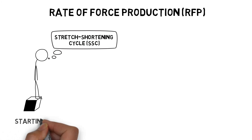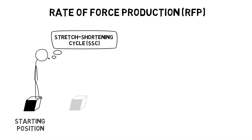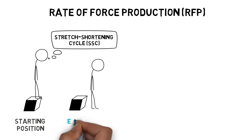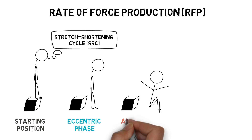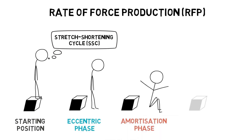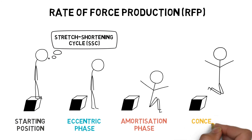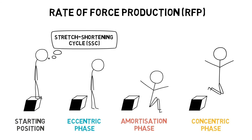A perfect example of this in action occurs during a depth jump. As the individual begins to land, the muscle lengthens, which is known as the eccentric phase. When the individual is at the bottom of the landing, the muscles are loaded, which is known as the amortization phase. And as the individual explodes back up, the muscles fire, which is known as the concentric phase.